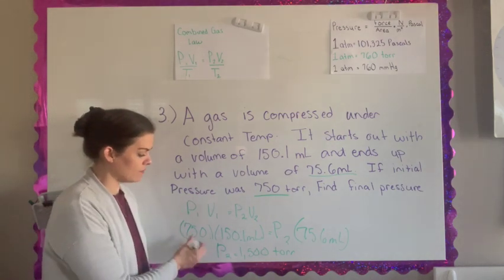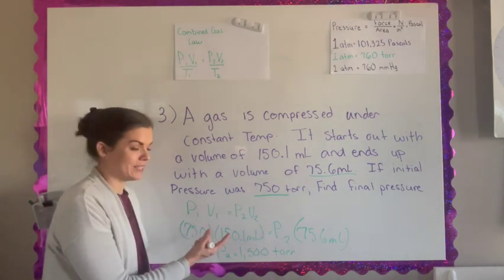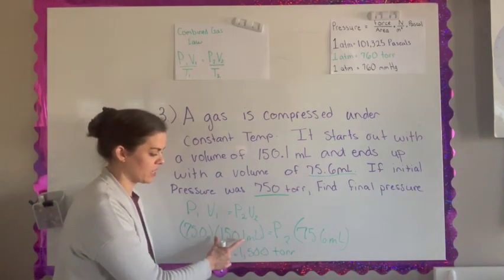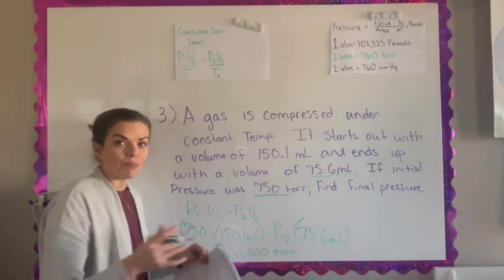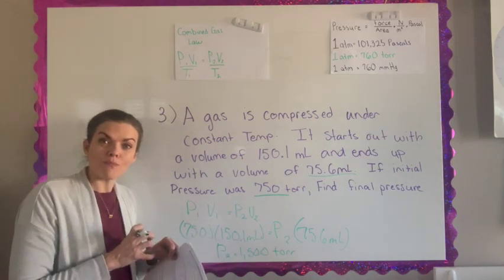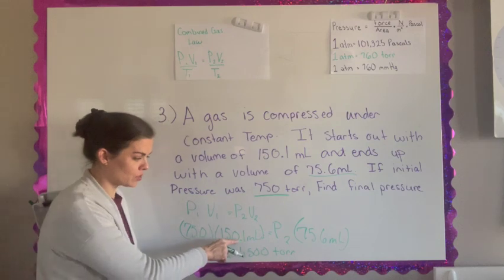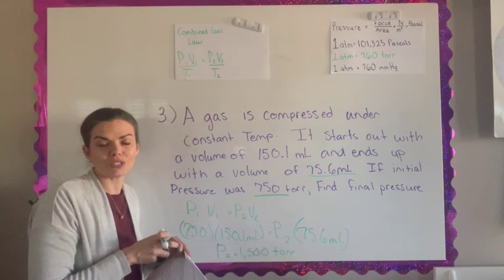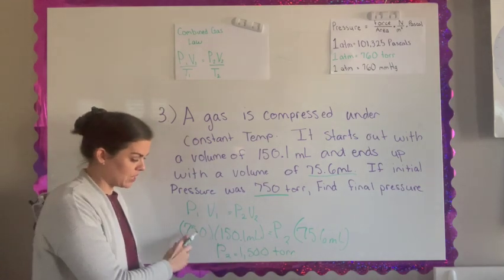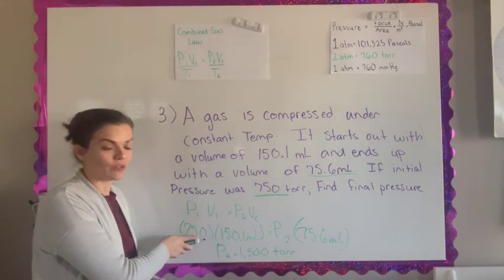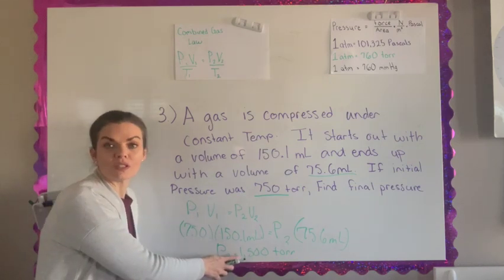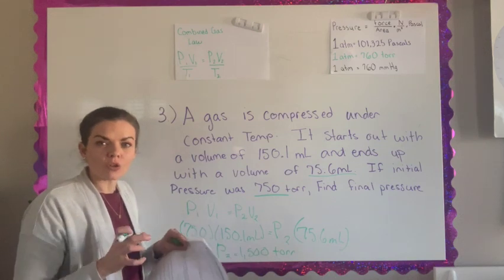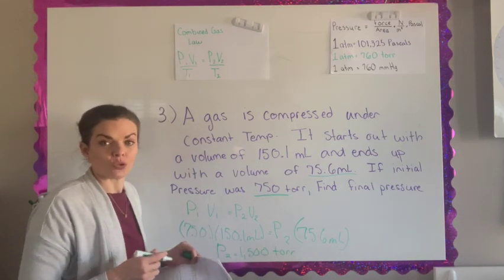I'm going to use torr for my units because torr is what I was given. So my result was 1,500 torr. Basically if I have some volume of gas, it's easy to think of a balloon, and it's at a 750 torr pressure and it takes up 150 milliliters. But I'm going to be shrinking that balloon down from 150 milliliters to 75 milliliters. And so as I push those molecules together, the pressure should go up. And as you'll see in my formula, it goes from 750 to 1,500. So as that volume of the gas is getting smaller, the pressure that the gas is pushing out is getting greater.